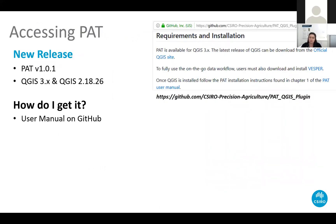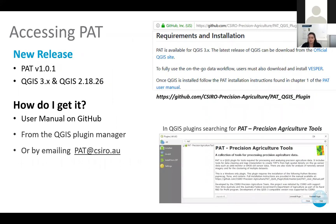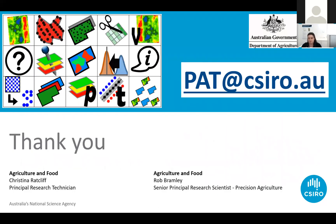Just this week we have released a new version of PAT compatible with QGIS 3. It can be found on PAT's GitHub page or in the QGIS plugin manager. Email inquiries to PAT at CSIRO.AU are also welcome. If you have any questions regarding PAT, please get in contact with us. Thank you.